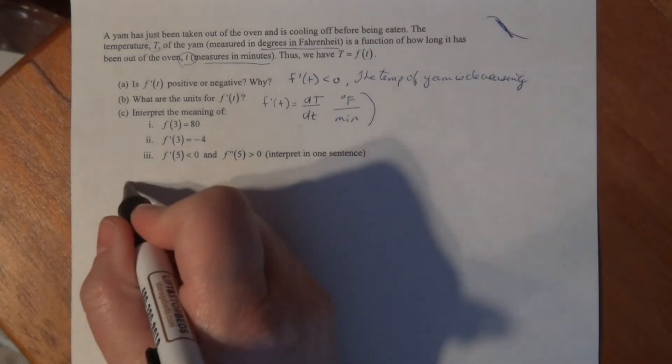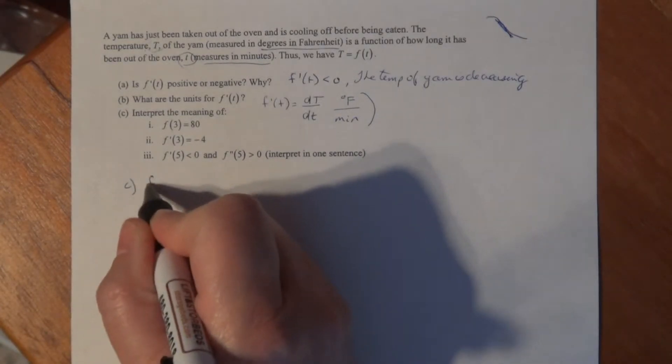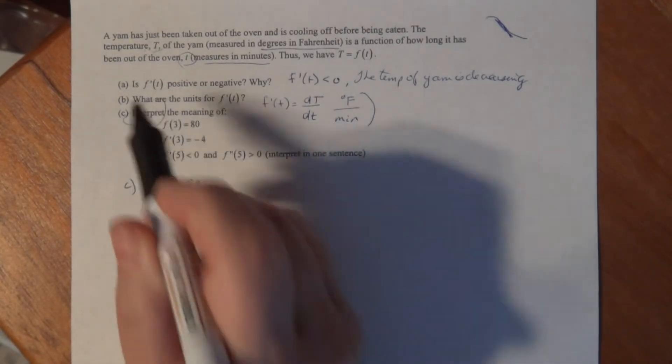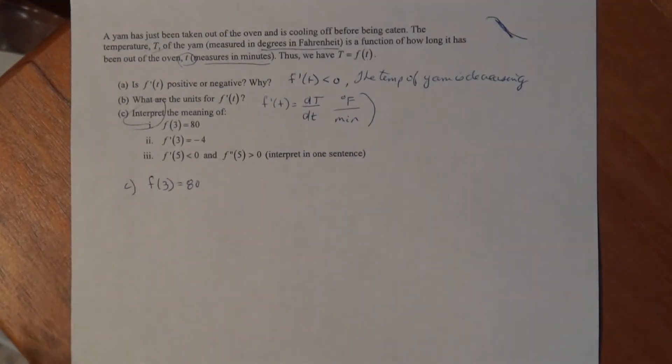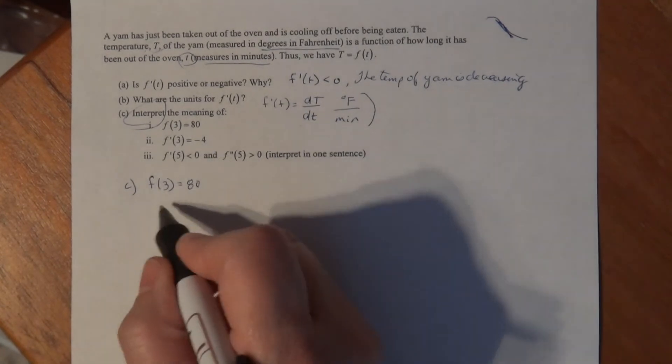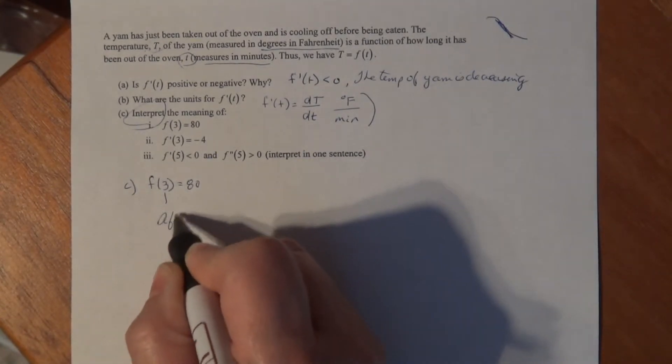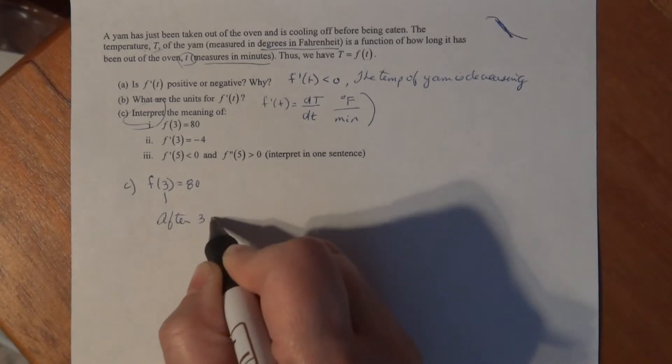Part C: Interpret the meaning of F of 3. When we say interpret, we want complete sentences, not half thoughts. When I interpret F of 3 equals 80, this is just the function itself, nothing fancy. Always start with talking about what the input says. After three minutes, three minutes have passed.